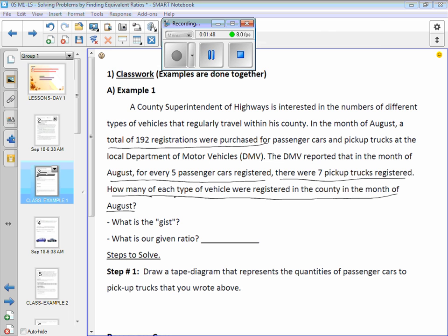I want you to put a double underline because this is what the question is really asking you, and this is what we have to figure out by using our models. So I'm going to put two underlines under that because we don't want to forget what the question is. From this information, what is our given ratio? Let's put it in colon form.